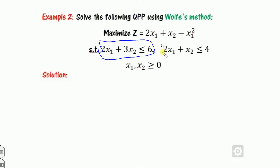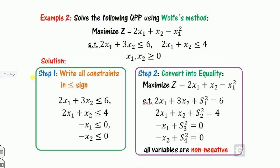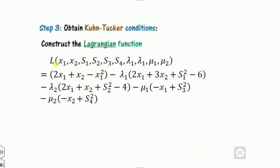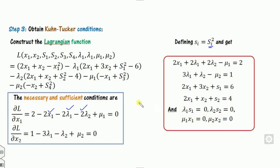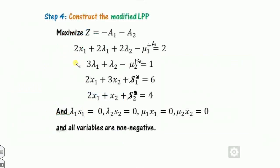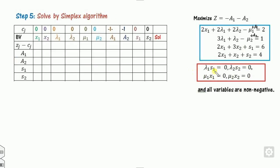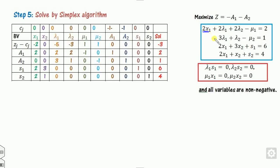Now for Example 2, which has two constraints. Step one: write all constraints in less-than-or-equal-to form. Slack variables s1-squared and s2-squared are added. Here I use lambda-1, lambda-2, mu-1, and mu-2. Writing the KKT conditions and taking the necessary derivatives gives the first equation as 2x1 + lambda-2 and so on. These are the KKT conditions. The modified LPP uses artificial variables. The simplex tableau values are 2, 0, 2, 2 for the relevant column.